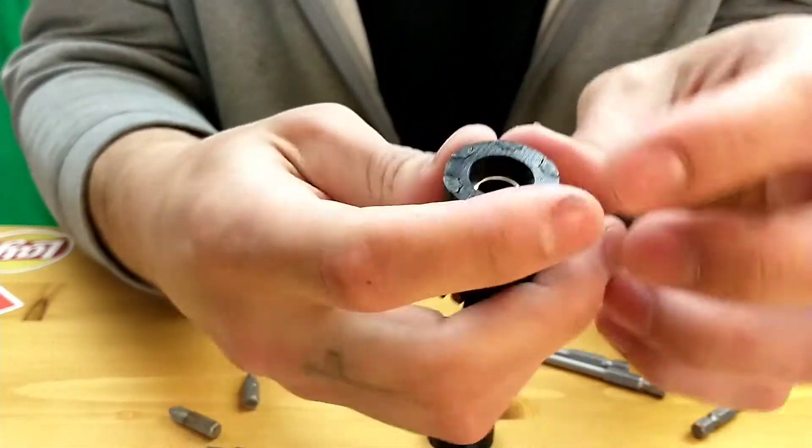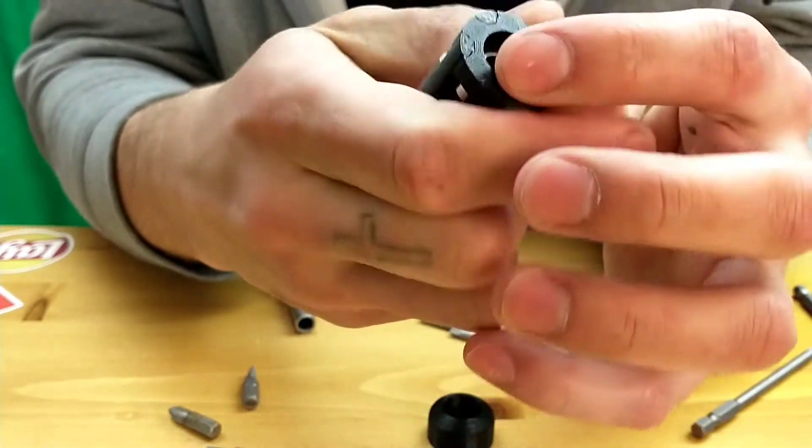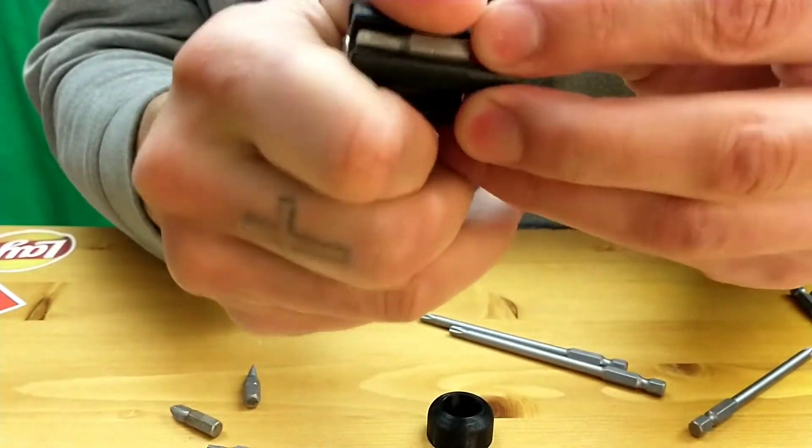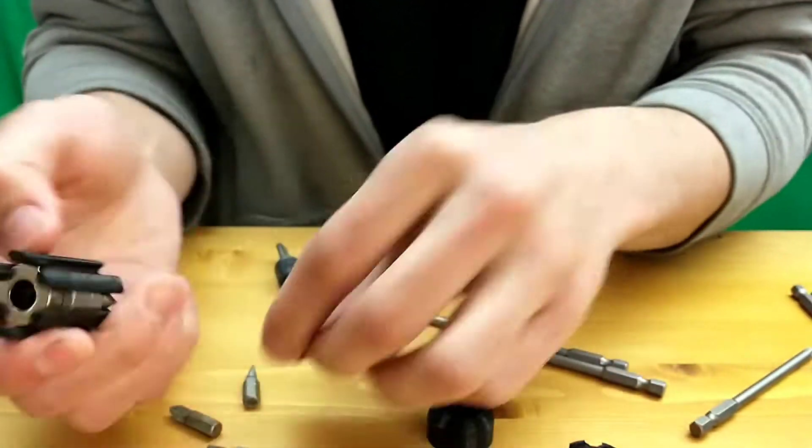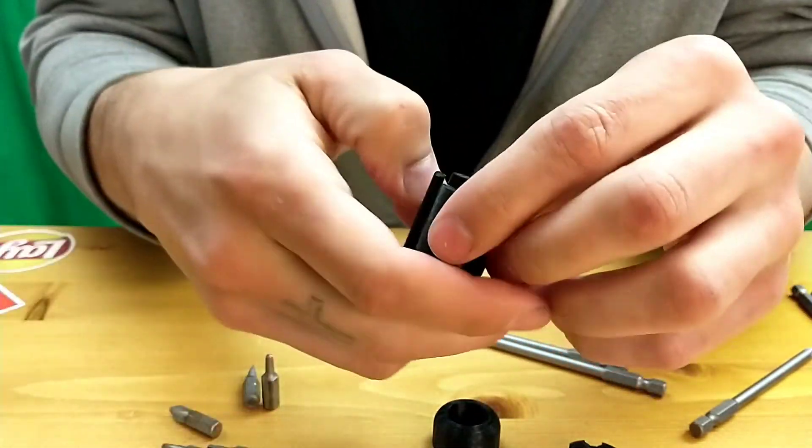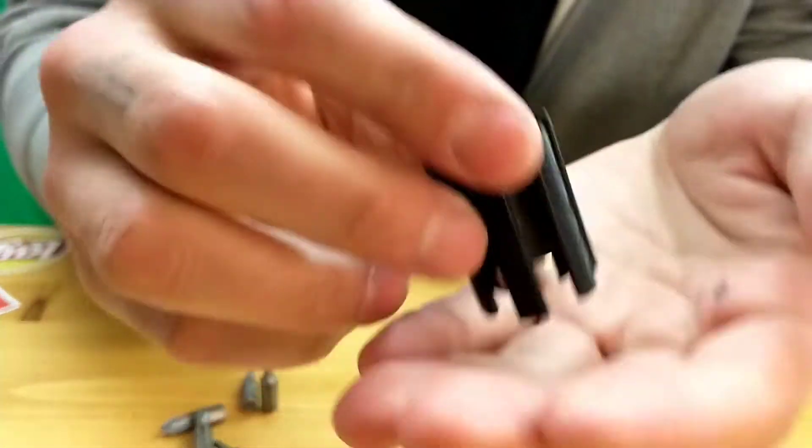We got the body here. It's got this little retaining ring that holds the magnet in place. Stick these bits out. We got the magnet.